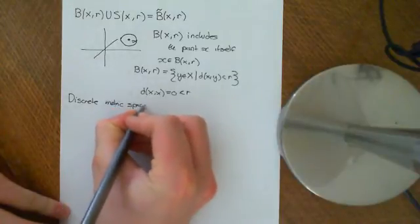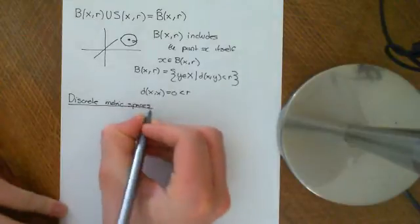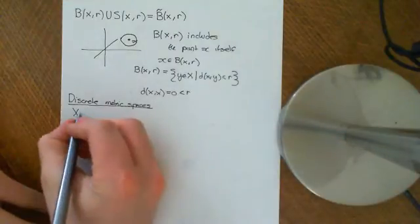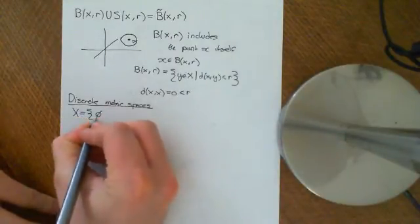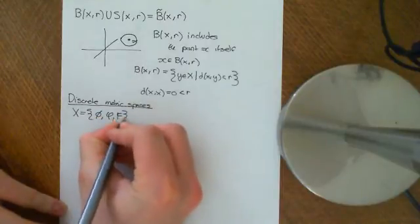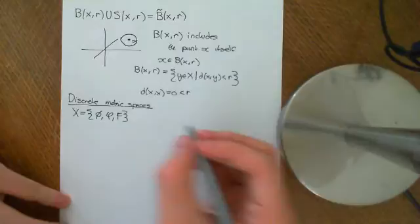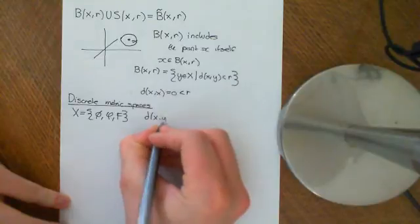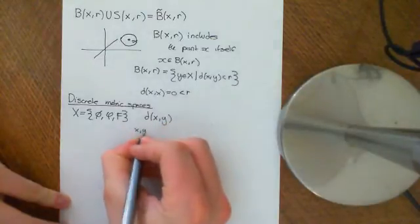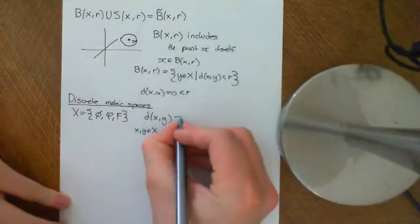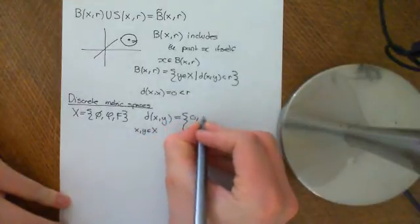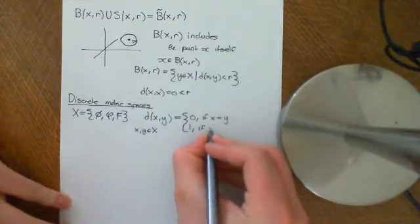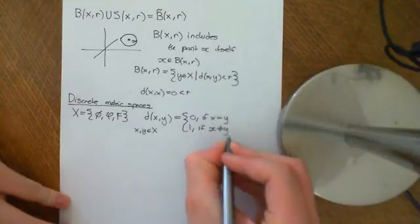I'm just going to quickly remind you of what a discrete metric space is. A discrete metric space consists of a set X — you can take whatever set you like, for example the set {Φ, φ, f}, a perfectly good set of three elements. The discrete metric defines the distance between any two elements x and y, where x and y are elements of X, to be 0 if x equals y, and 1 if x is not equal to y.